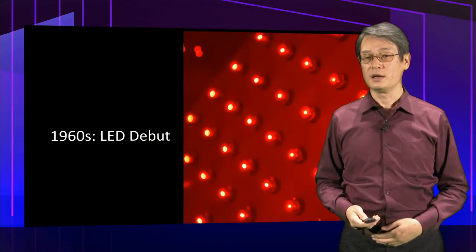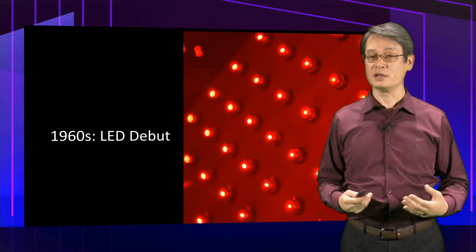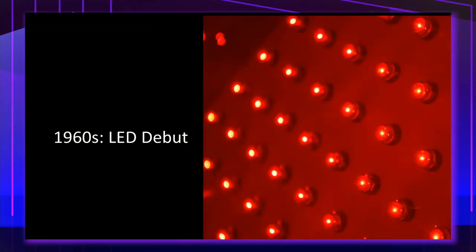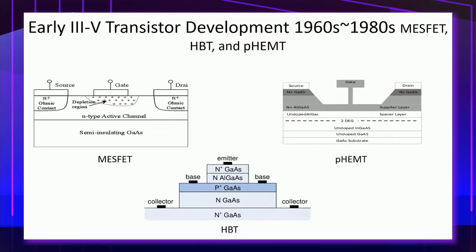In the 1960s, the first LED was demonstrated using gallium arsenide for red LED. Early 3-5 transistors were actively developed and materialized between the 1960s and 1980s. The MESFET was the first 3-5 transistor, which later evolved into the PHEMT, used today for high-frequency applications such as millimeter wave or microwave integrated circuits.